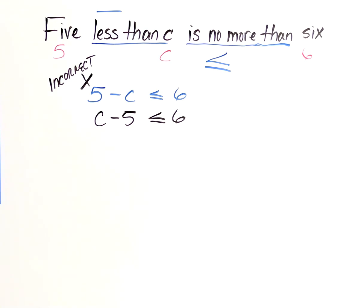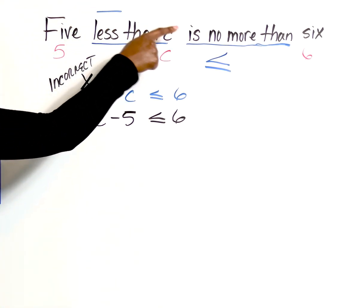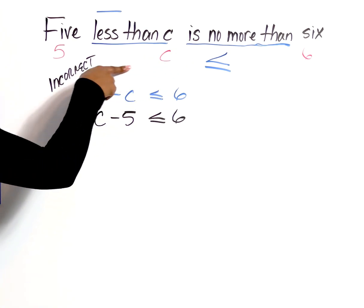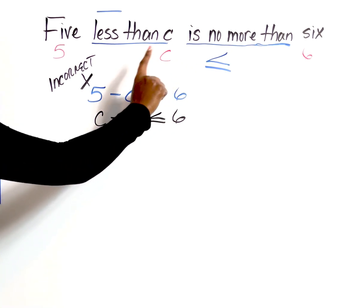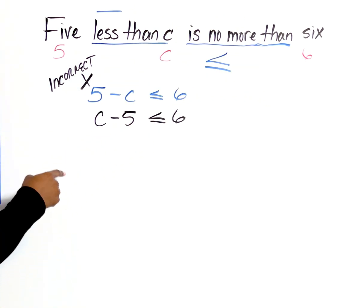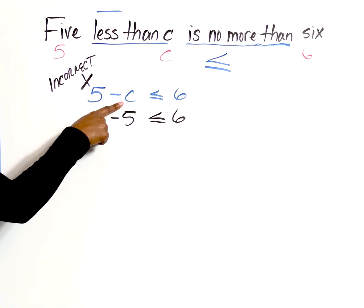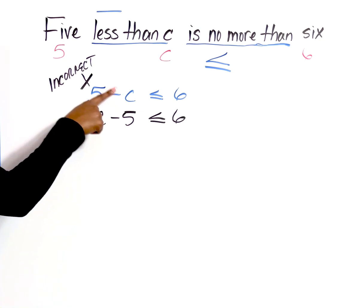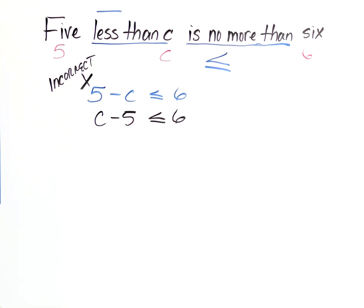So the first thing we did was located our keywords. So less than, of course, meant we had to subtract. No more than meant that whatever was in front of that was less than or equal to whatever was on the opposite side. So when we wrote it down just as we saw it, we saw what our initial issue was. We had 5 minus C when in reality, anytime we get less than, it always has to go where? To the back. So make sure you pay attention to that. We brought everything else down and we were good to go.